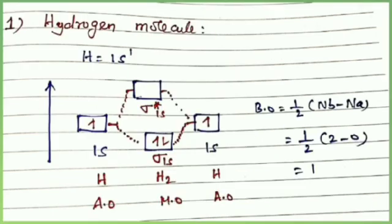Now let us discuss some examples of homonuclear diatomic molecules. First one is the hydrogen molecule. Hydrogen atom combines with hydrogen atom to form a hydrogen molecule. Hydrogen has atomic number 1, therefore 1s1 configuration. Two hydrogen atoms each with 1s1 combine; sigma 1s is filled with 2 electrons, sigma star 1s has no electrons. Bond order = 1/2 × (2 − 0) = 1. Hydrogen molecule contains a single bond and has no unpaired electrons, so it is diamagnetic in nature.